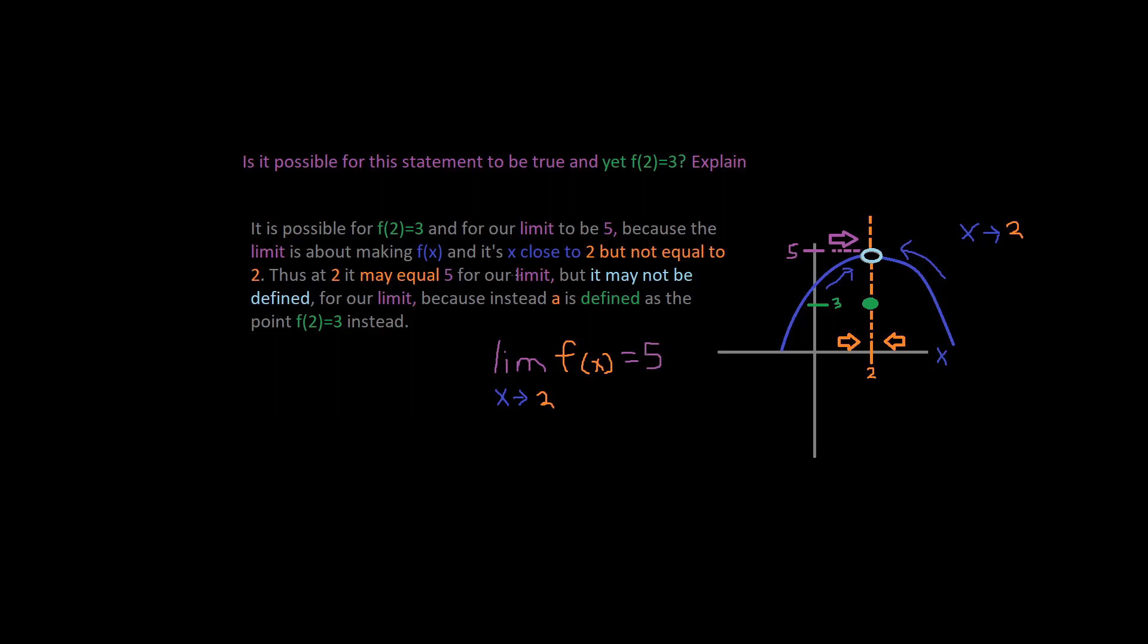It may equal 5 for our limit, but it may not be defined. So right here it has an open hole, right? This point is open and so it's not defined at that given point. So it's not defined for our limit, because instead it is defined as the point f of 2, which equals 3 instead. So it's defined at this point but not at that point. So is it possible for this statement to be true and yet f of 2 equals 3? Yes.